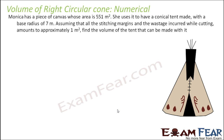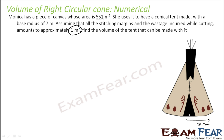Monica has a piece of canvas whose area is 551 m². She uses it to make a conical tent with a base radius of 7 meters. Assuming that stitching margins and wastage while cutting is approximately 1 m², we have to find the volume of the tent. Since height is not given, we first need to find it.